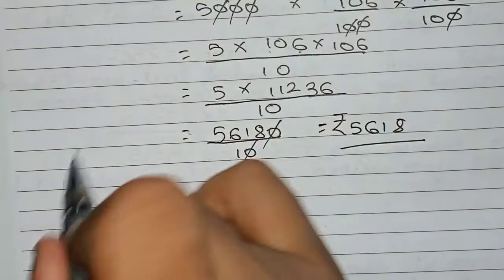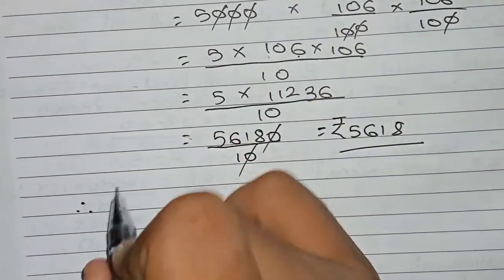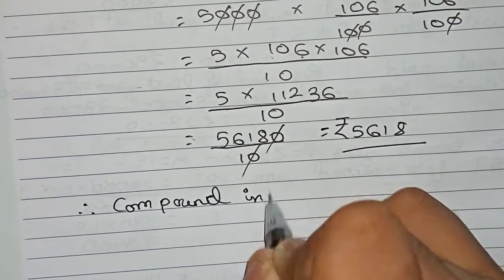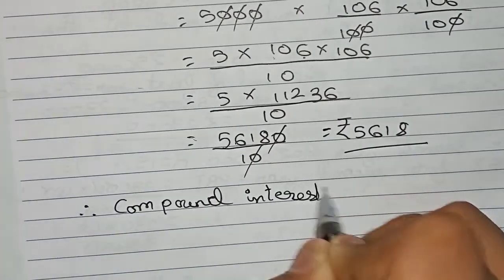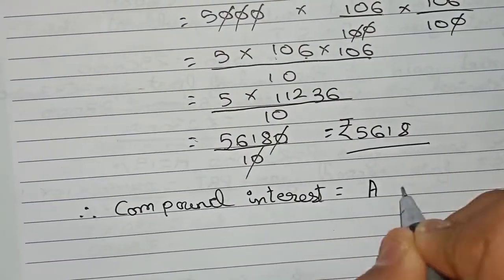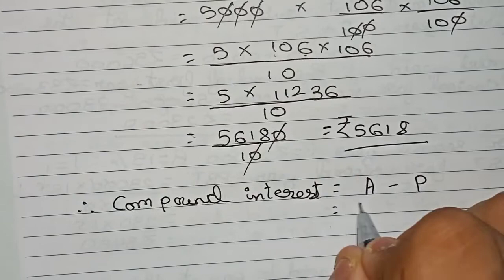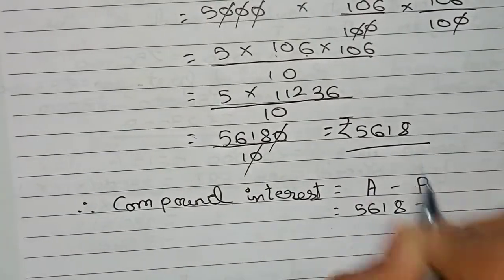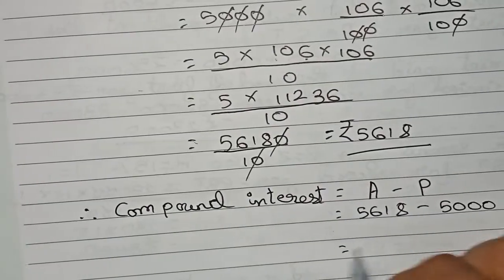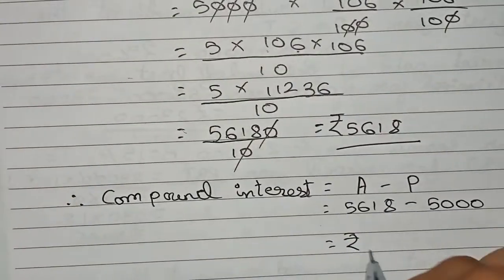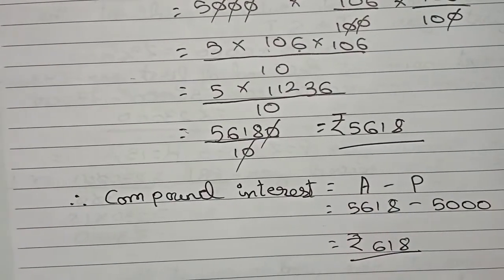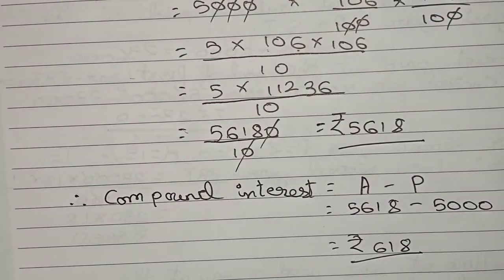Now our final statement: we have to find the compound interest. Therefore the compound interest is equal to amount minus principal. So amount is 5618 minus our principal that is 5000, so it becomes rupees 618. Therefore our amount for this question is 5618 and our compound interest is 618.